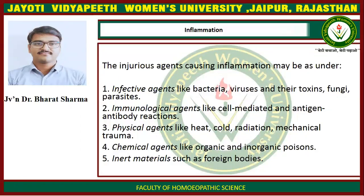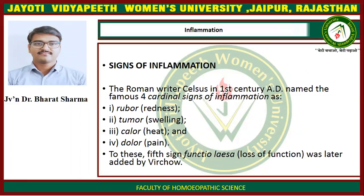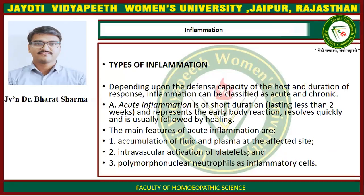Signs of Inflammation: The Roman writer Celsus in the first century AD named the famous four cardinal signs of inflammation. First is rubor, also known as redness. Second is tumor, also known as swelling. Third is calor, which is heat, and fourth is dolor, which is also known as pain. To these, a fifth sign — functio laesa, meaning loss of function — was later added by Virchow.